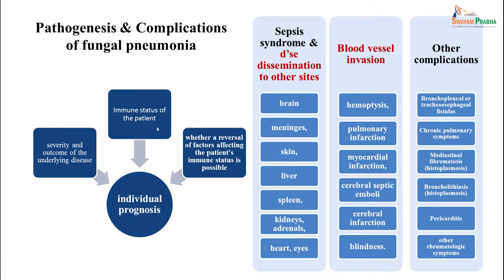The prognosis of these cases depends on the severity of infection, the immune status of the patient, and whether that immune status is reversible. If immunosuppressants can be stopped and immune function restored, the patient has better chances of recovering. The disease may remain localized in the lungs or disseminate to the brain, skin, or liver. Blood vessel invasion can lead to thrombosis, pulmonary infarction, and other complications.